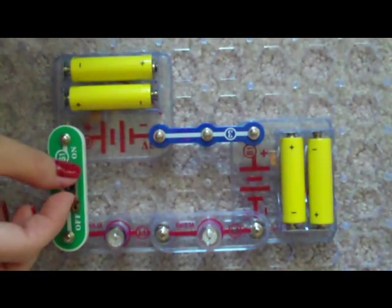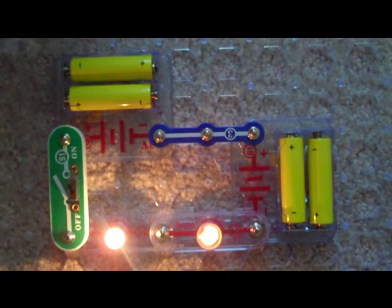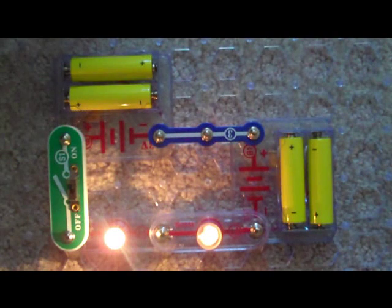When the switch is moved to the on position, the circuit becomes closed. A closed circuit is complete, allowing the electricity to flow through the circuit.